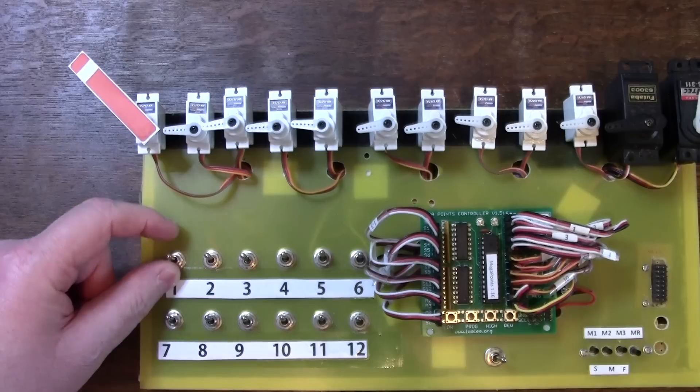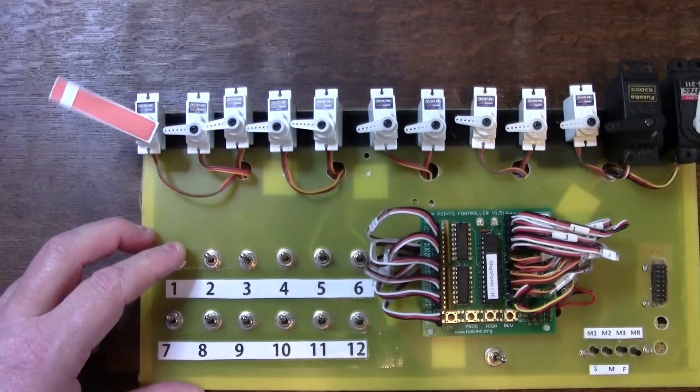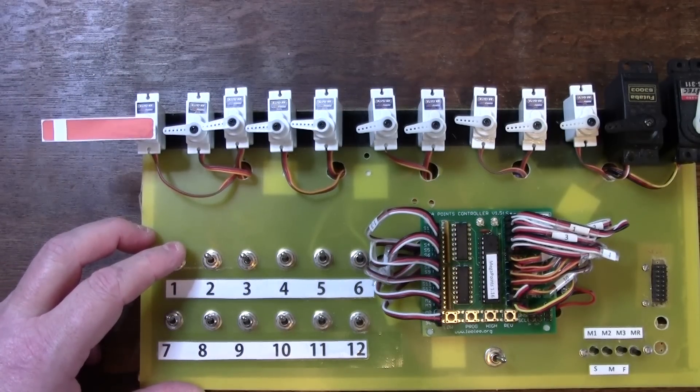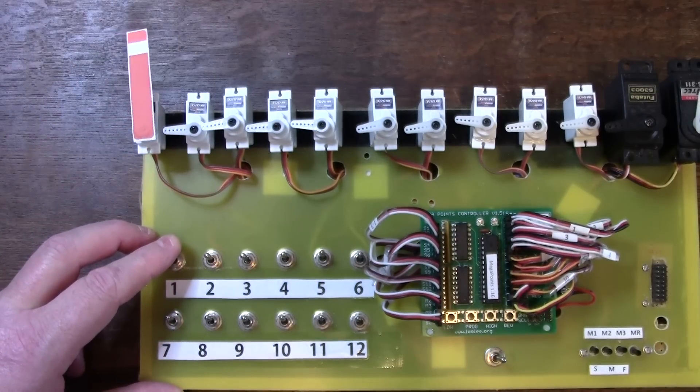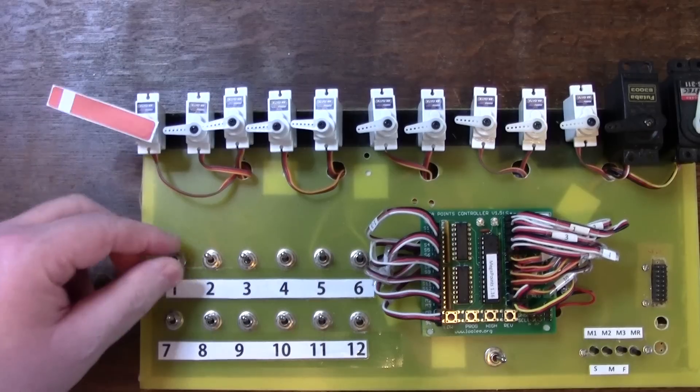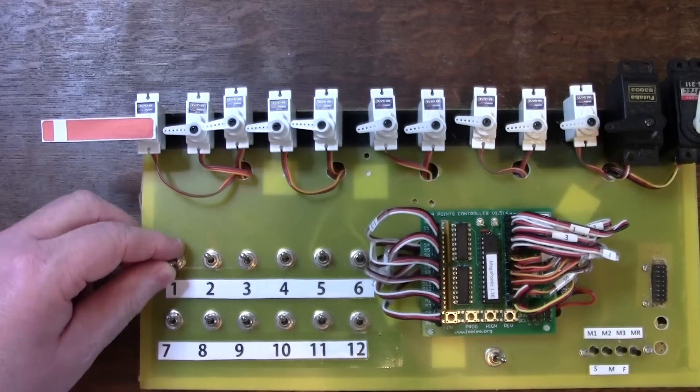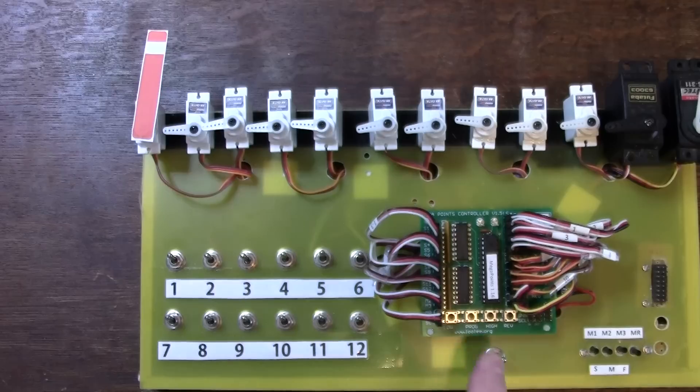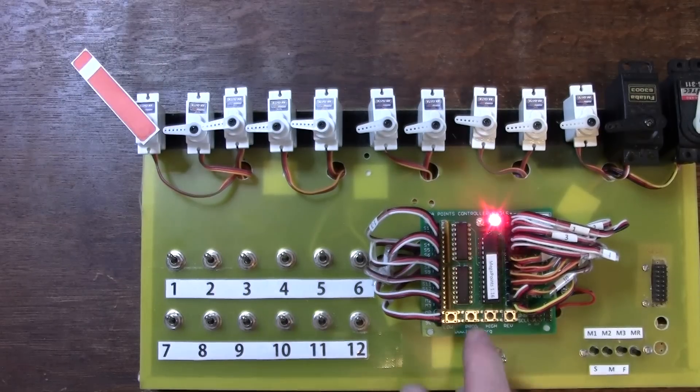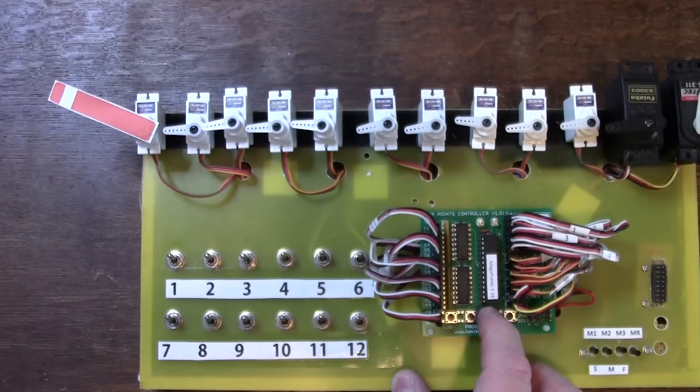This works best when the servo arm moves 45 degrees. It seems to be the best compromise of resolution and speed. So what I'll do now is I'll move the semaphore so that it stops horizontal like it is now and on the way up at clear stops at 45 degrees.